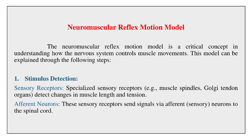Neuromuscular Reflex Motion Model: This is a critical concept in understanding how the nervous system controls muscle movements. Stimulus detection involves specialized sensory receptors — such as muscle spindles and Golgi tendon organs — that detect changes in muscle length and tension. These sensory receptors send signals via afferent sensory neurons to the spinal cord.